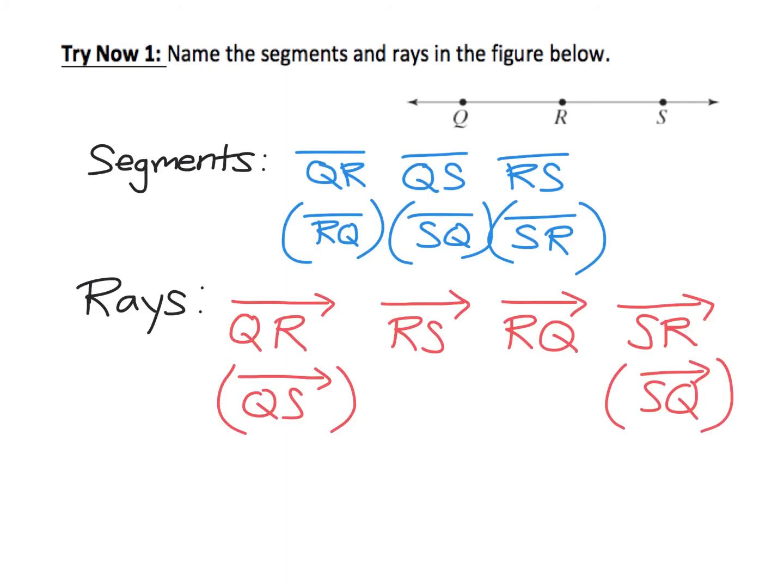So here are the three segments labeled from the picture. Again, remember that for a segment, the order of the letters doesn't matter. So QR and RQ are the same segment. You need to have just one of those.